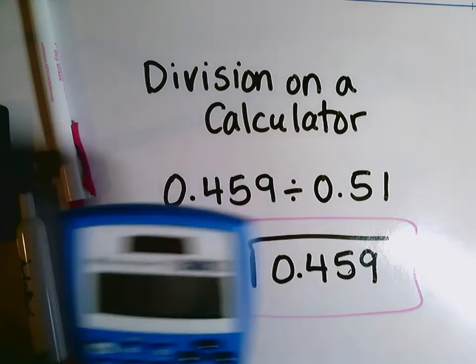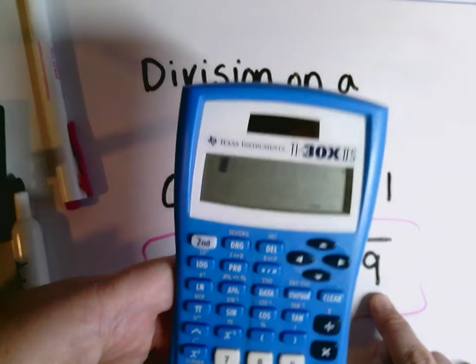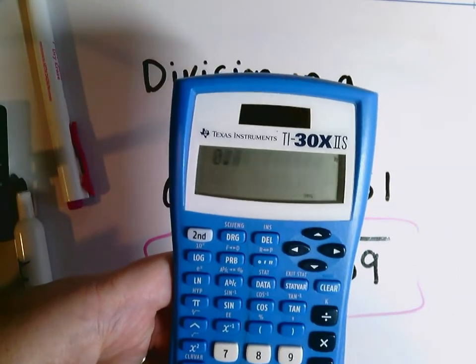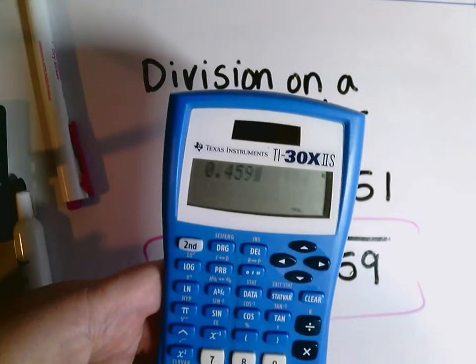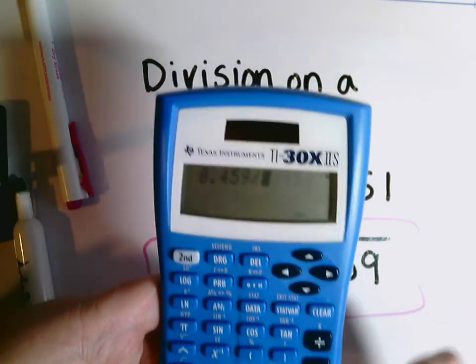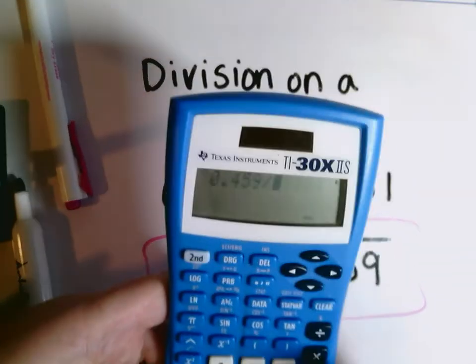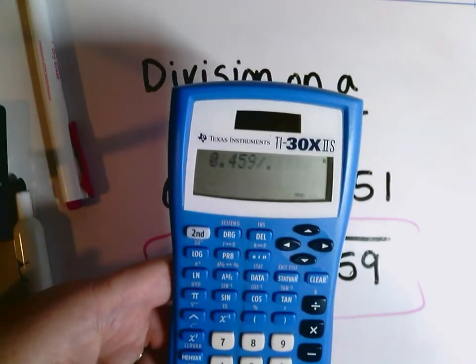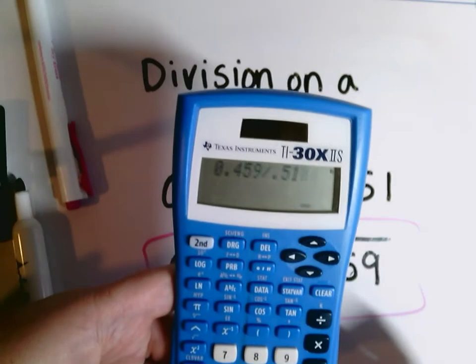In our calculator we would put the dividend in first, which would be 0.459. 459 thousandths. Then we'd hit the divide by button, the divided button. And then we would be dividing by 51 hundredths. I don't have to put the zero into the calculator but you can. It's not going to change the answer.